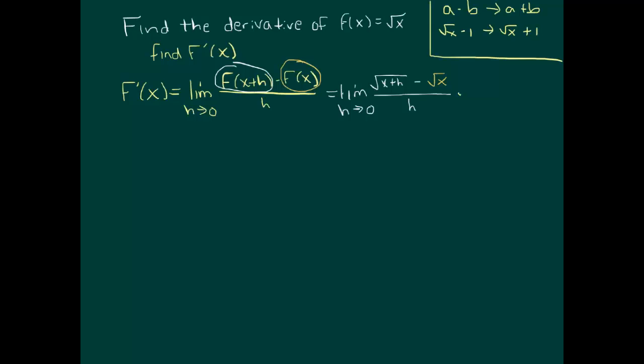So with that in mind, if we multiply the top by square root of x plus h plus square root of x, again viewing this as like my a and that as like my b,